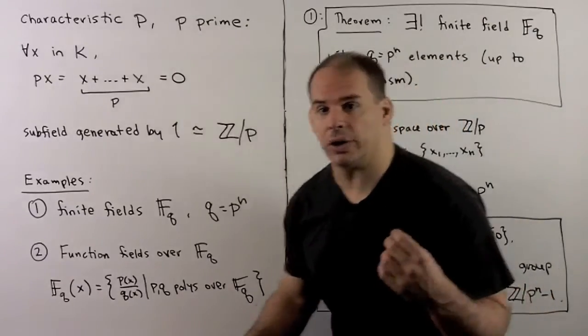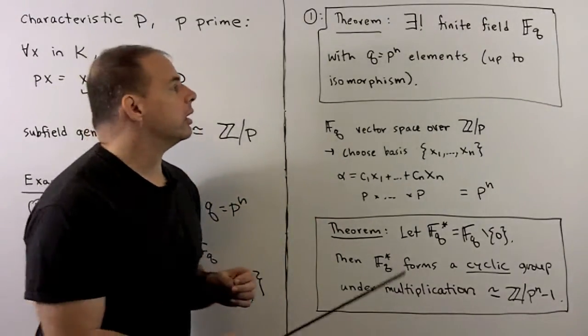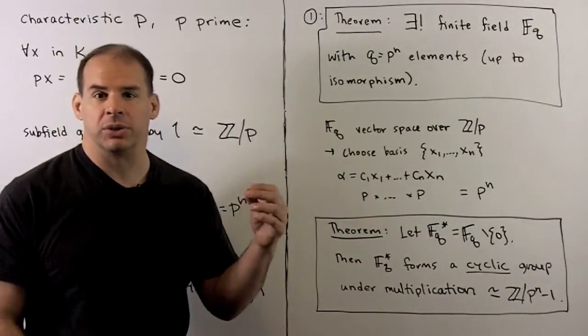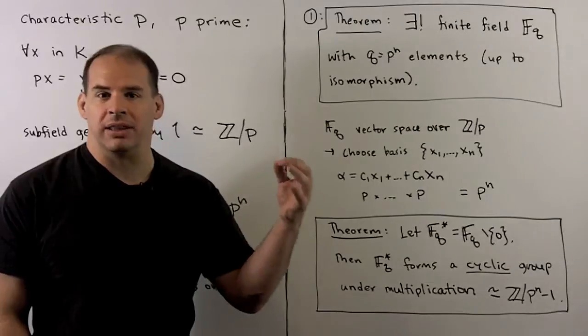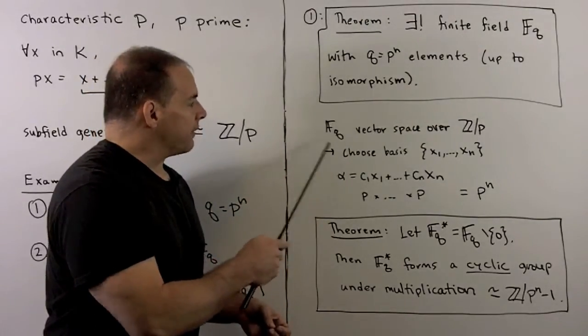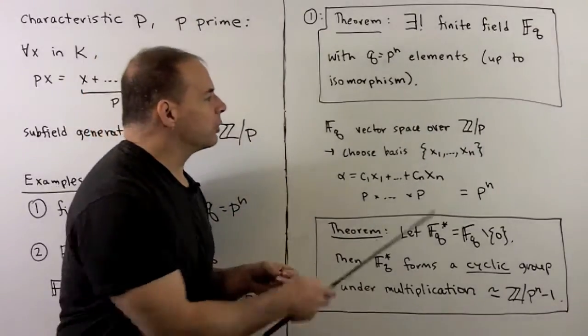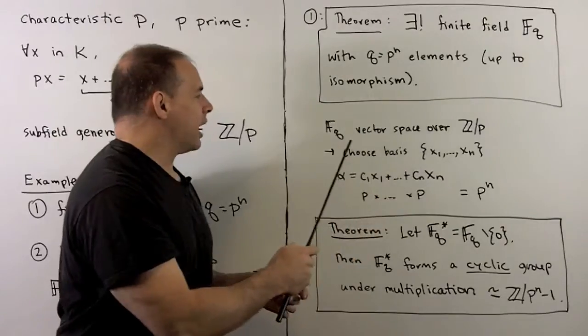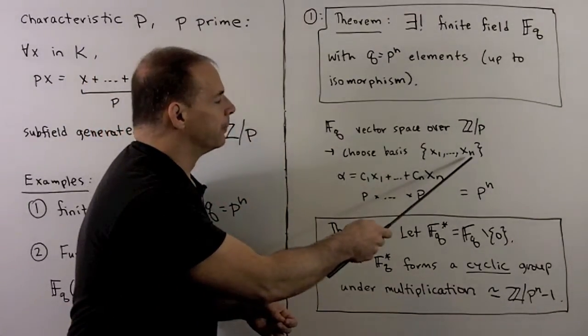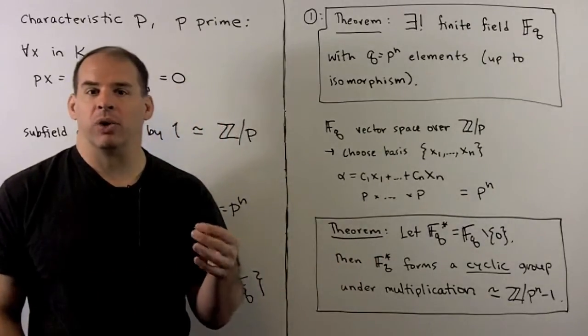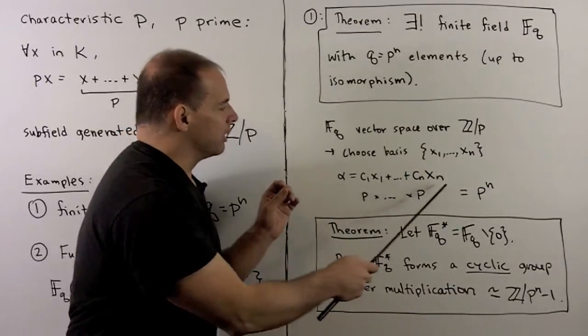So let's recall some results from the ring theory course. For our first result, we didn't prove this, but we will eventually. Up to isomorphism, there exists a unique finite field F_q with q equal to p to the n elements. Now, to narrow the orders of fields down to p to the n, how do we see that? So we have F_q, inside of F_q is Z mod p, and if we check the conditions, F_q is going to be a vector space with coefficients over Z mod p. Now, because F_q is finite, that means it's a finite dimensional vector space, and I can choose a basis, x1 through xn. This means every element in the field can be written uniquely as a linear combination of the x's with coefficients in Z mod p. So we have a general element that looks like this.